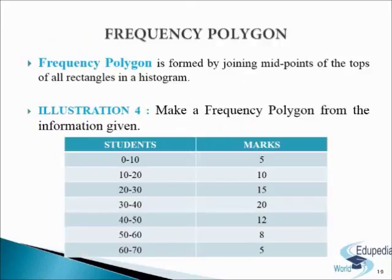Next we come to frequency polygon. A polygon is another form of diagrammatic presentation of data. It is formed by joining the mid-points of the tops of all rectangles in a histogram. However, a polygon can be drawn even without constructing a histogram. For this, mid values of the classes of a frequency distribution are marked on the x-axis of the graph, and the corresponding frequencies are marked on the y-axis. Using a foot rule, all points indicating frequencies of the different classes are joined to make a frequency polygon. Both sides of the frequency polygon are extended to meet the x-axis at the mid-points of the immediately lower or higher imagined class intervals of zero frequency. This is done to ensure that the area of the frequency polygon is the same as that of the corresponding histogram.